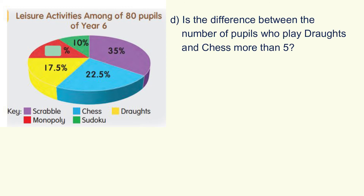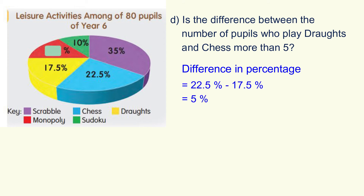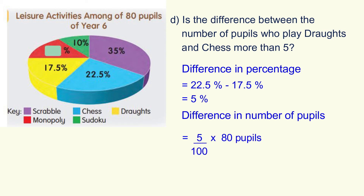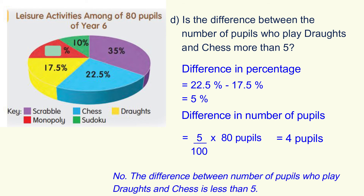Look at D: Is the difference between the number of pupils who play Draft and Chess more than 5? To solve this, first find the difference in percentage between Draft and Chess: 22.5% minus 17.5% equals 5%. Then, 5% of 80 pupils gives us 4. So the difference between the number of pupils who play Draft and Chess is less than 5. No, it is not more than 5.